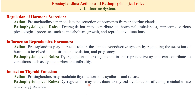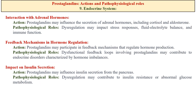Dysregulation of prostaglandins can result in dysmenorrhea and infertility. Prostaglandins also modulate thyroid hormone synthesis and release, and dysregulation may contribute to thyroid dysfunction affecting metabolic rate and energy balance. Prostaglandins may also influence the secretion of adrenal hormones such as cortisol and aldosterone; during inflammatory responses, they can interact with stress hormones, and dysregulation may impact stress responses, fluid and electrolyte balance, and immune functions. Prostaglandins participate in feedback mechanisms that regulate hormone production, and dysfunction of this loop may contribute to endocrine disorders. Additionally, prostaglandins influence insulin secretion from the pancreas, and dysregulation contributes to insulin resistance or abnormal glucose metabolism.